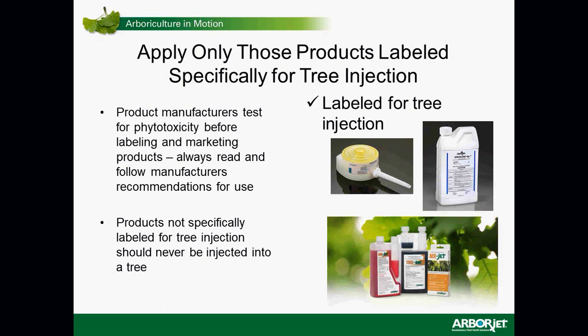We've gotten negative reports where people tried to inject products that weren't even very water-soluble into tree tissues, especially in the Midwest for emerald ash borer — they claimed it was a labeled product, but it just didn't work and the trees failed. Some labeled products available on the market include Mojo products and our Arborjet products. Use labeled products.